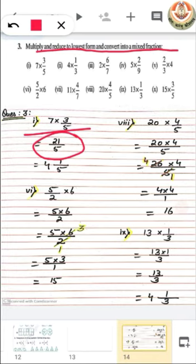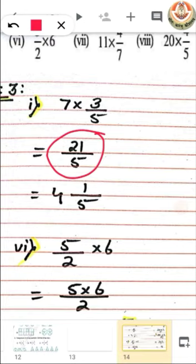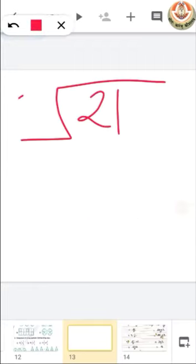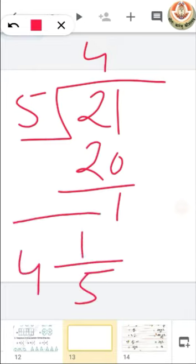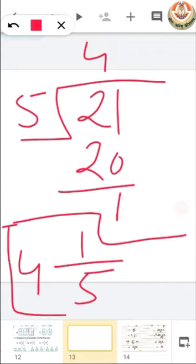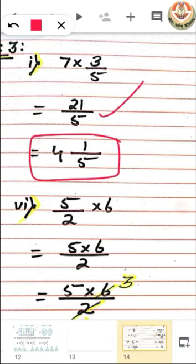Now, 21 by 5 cannot be reduced — it is already in its lowest form. So let's convert it into a mixed fraction. 5 multiplied by 4 gives 20, and we add 1 as remainder. So 21 by 5 in mixed fraction form is 4 and 1 by 5.